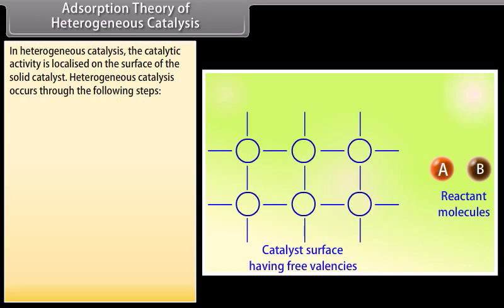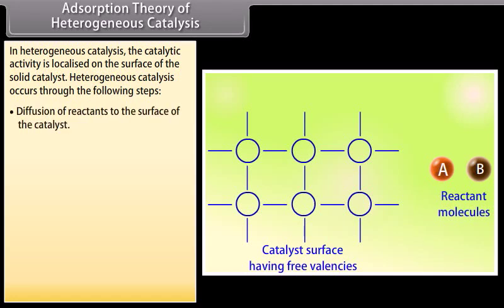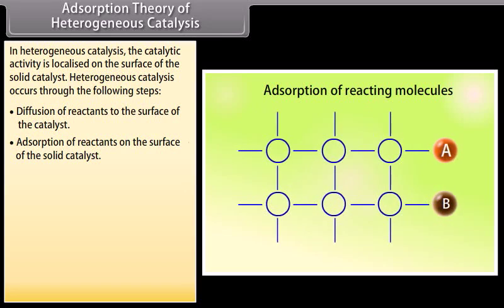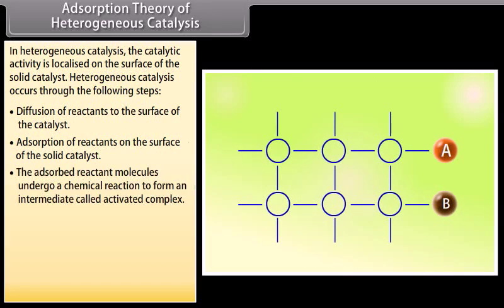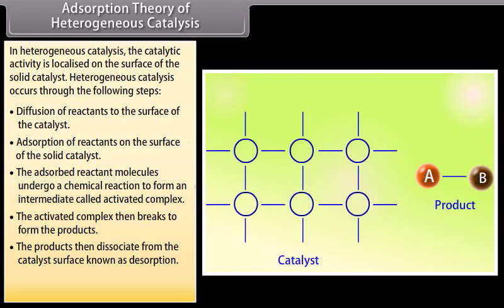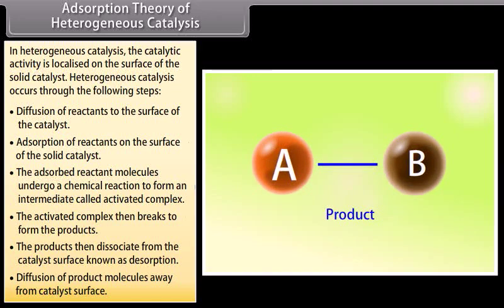In heterogeneous catalysis, the catalytic activity is localized on the surface of the solid catalyst. The steps are: diffusion of reactants to the catalyst surface; adsorption of reactants on the solid catalyst surface; the adsorbed molecules react to form an intermediate called the activated complex; the activated complex breaks to form products; products desorb from the catalyst surface; and product molecules diffuse away from the catalyst surface.